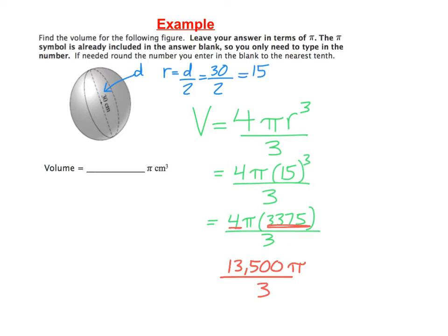When you put this in your calculator, leave the pi symbol out of it. We just do 13,500 divided by 3, which comes out as 4,500. So the volume of this sphere would be 4,500 pi. It's volume, which is always a unit cubed. So our final answer for volume would be 4,500 pi centimeters cubed.